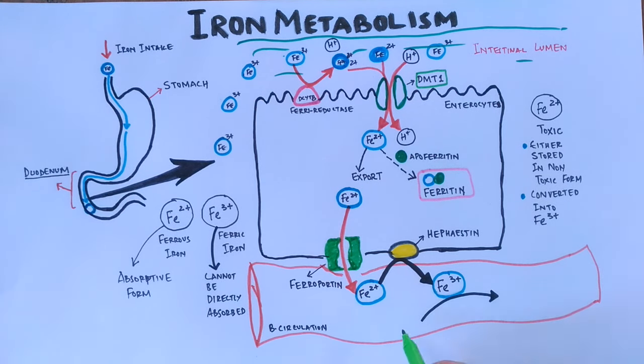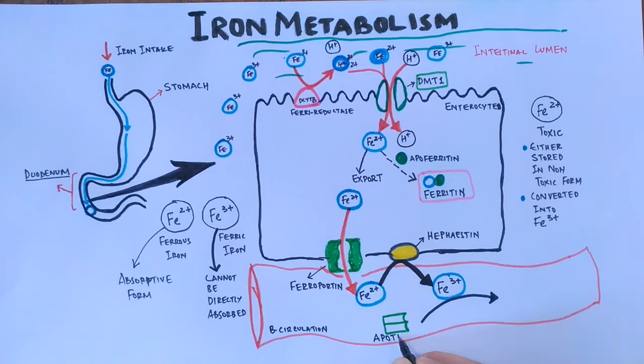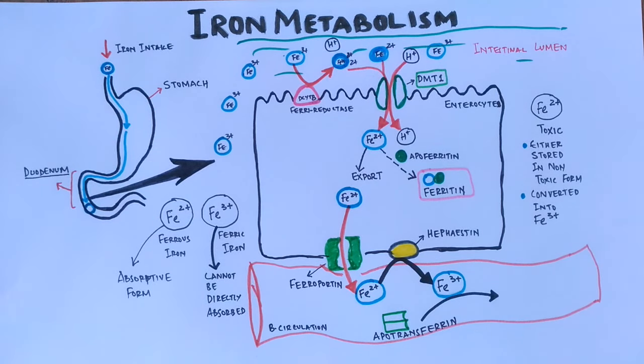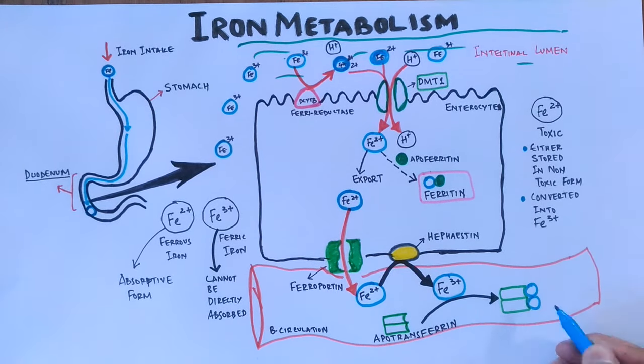And finally, the apotransferrin molecule binds to Fe3+ ions and makes a complex called iron transferrin. Now this iron can be transported to the other tissues and cells with the help of transferrin.